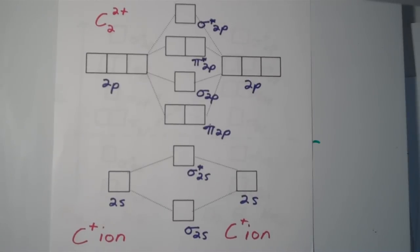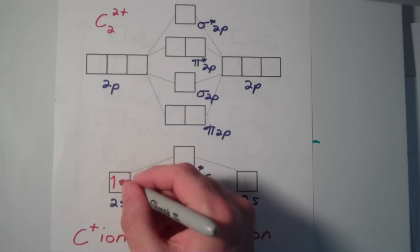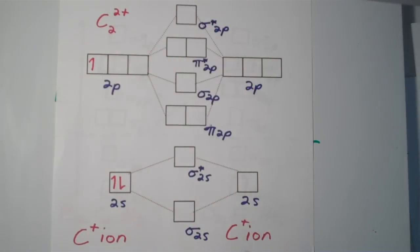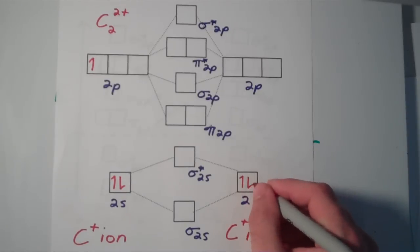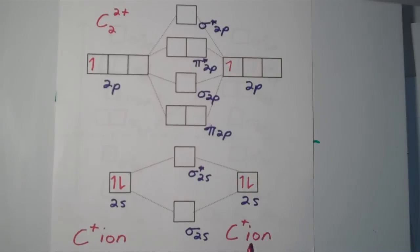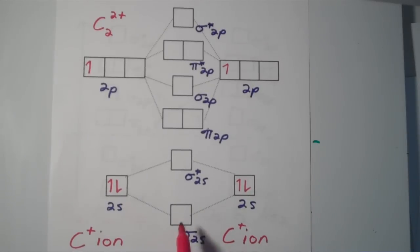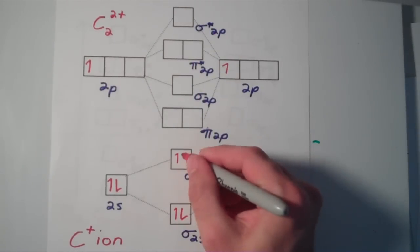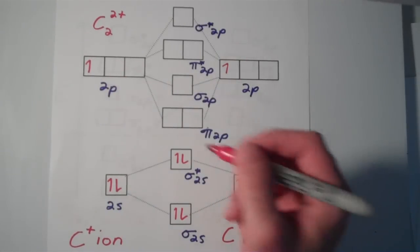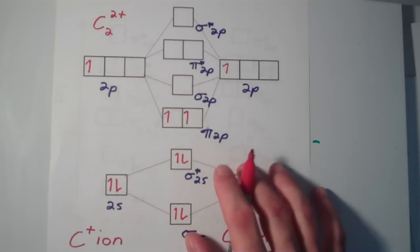Let's fill out the atomic orbitals first for each C⁺ ion. Carbon has four valence electrons, so a C⁺ ion has three valence electrons. We fill them in: one, two, three. We do the same for the other C⁺ ion: one, two, and the remaining electron goes in the p-orbitals. Now we fill the molecular orbitals in increasing energy order. The sigma 2s and sigma* 2s fill up, and then we have two electrons from the p-orbitals — one here and one here with parallel spin, following Hund's rule.